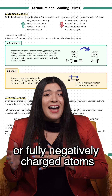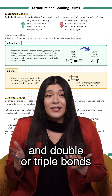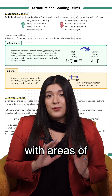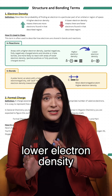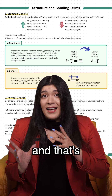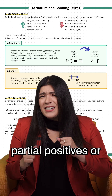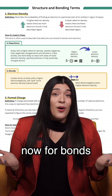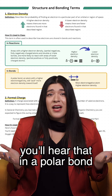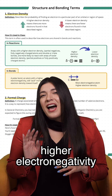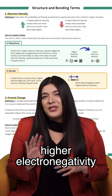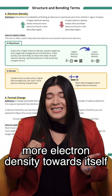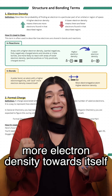negatively charged atoms and double or triple bonds — are more likely to react with areas of lower electron density, that's partial positives or fully positively charged atoms. For bonds, you'll hear that in a polar bond, an atom with a higher electronegativity will pull more electron density towards itself.